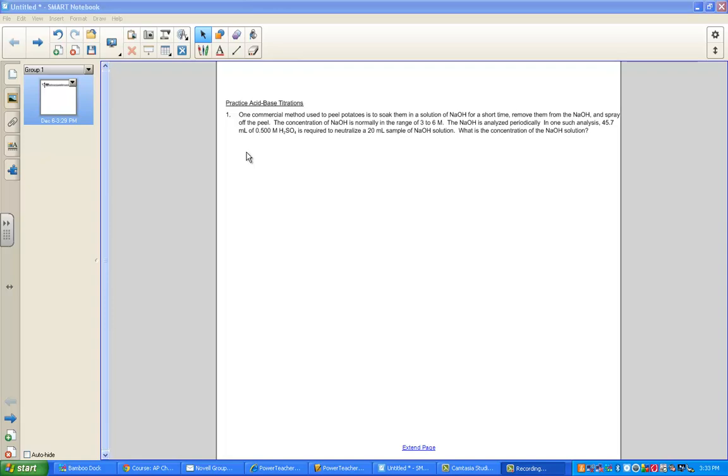Practice acid-base titration, top of page 21, talks about a commercially used method to peel potatoes by soaking them in a solution of sodium hydroxide for a short time, removing them from the base, NaOH, and spraying off the peel. The hours you save from having to peel potatoes in an industry-type setting.